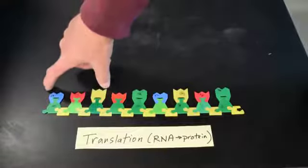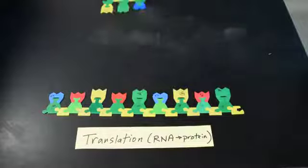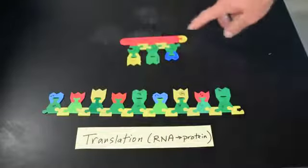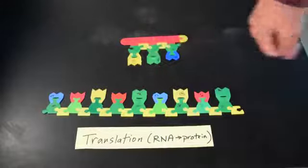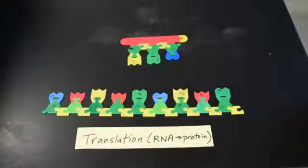So mRNA has triplets called codons. This will be our representation of a tRNA. The triplet of bases at one end of a tRNA are called the anticodon, and at the other end of a tRNA there is a spot where an amino acid can be attached.